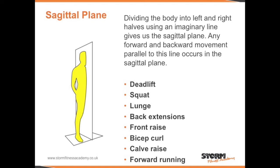Dividing the body into left and right halves using an imaginary line gives us the sagittal plane. Any forward and backward movement parallel to this line occurs in the sagittal plane — for example a deadlift, squat, lunge, back extensions, front raise, bicep curl, calf raise, and forward running.